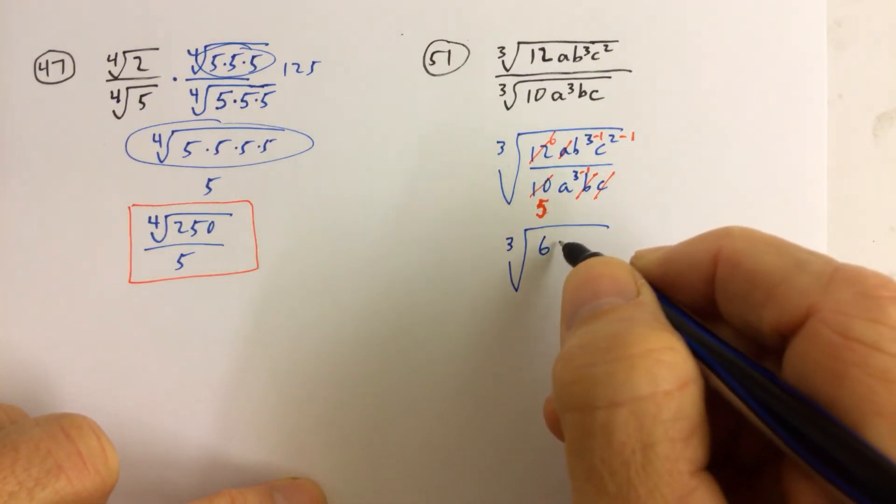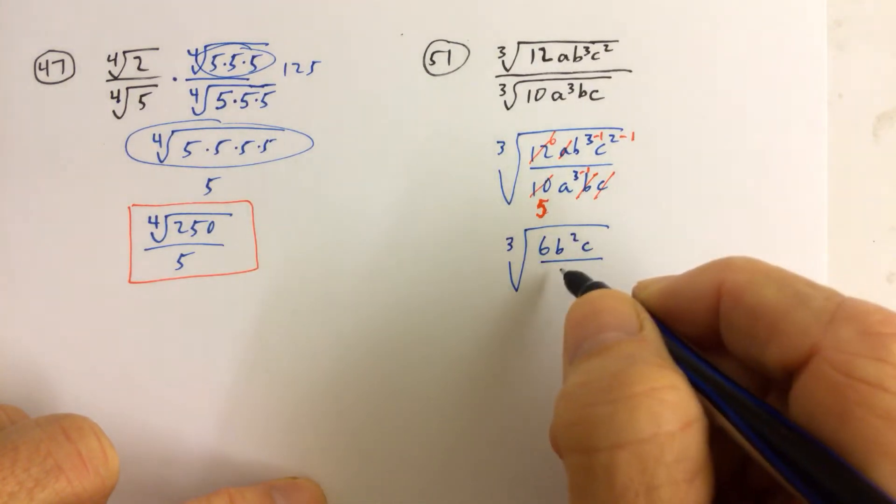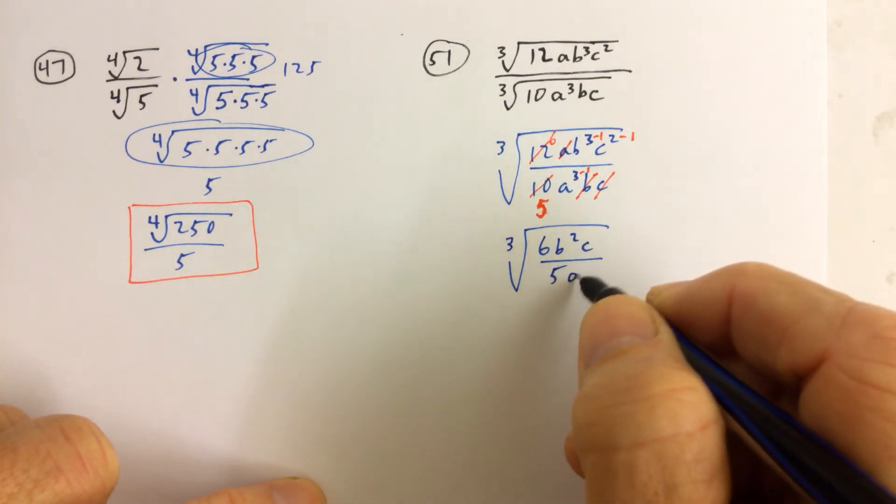what we have here is we have 6b squared c in the numerator, and then we have 5a squared.